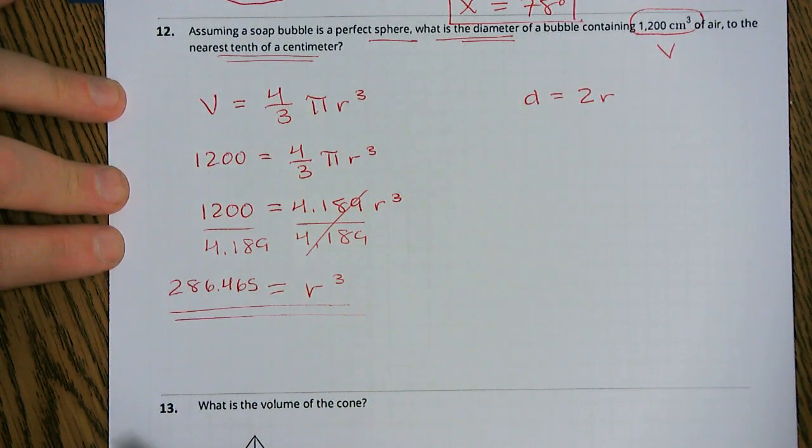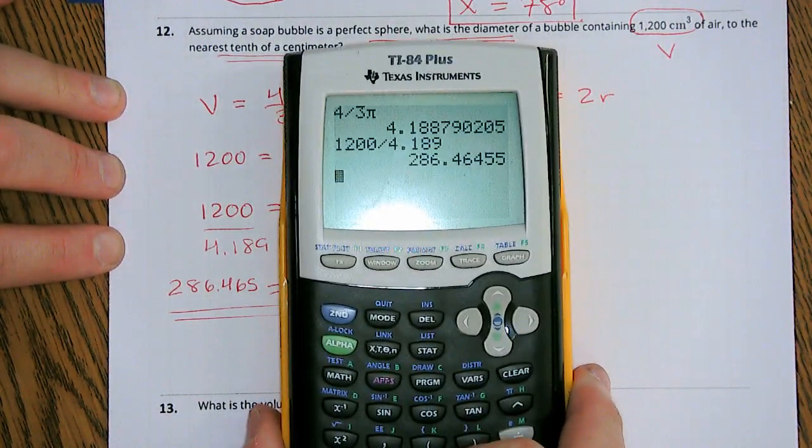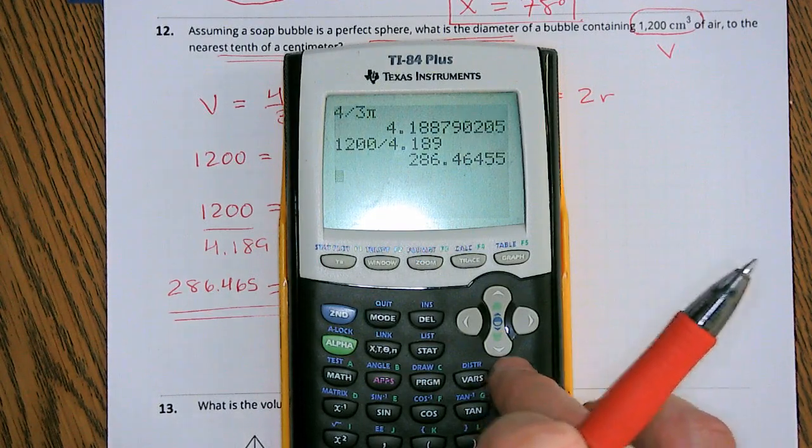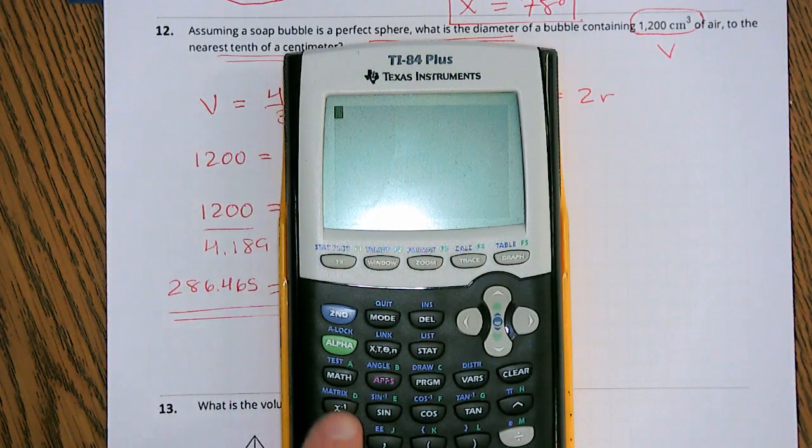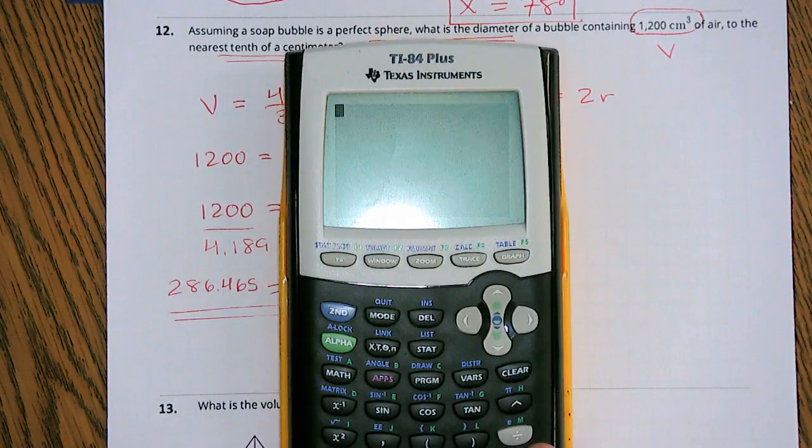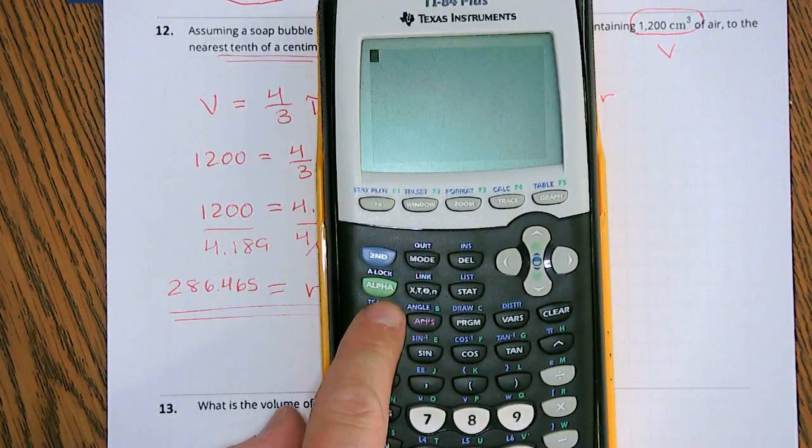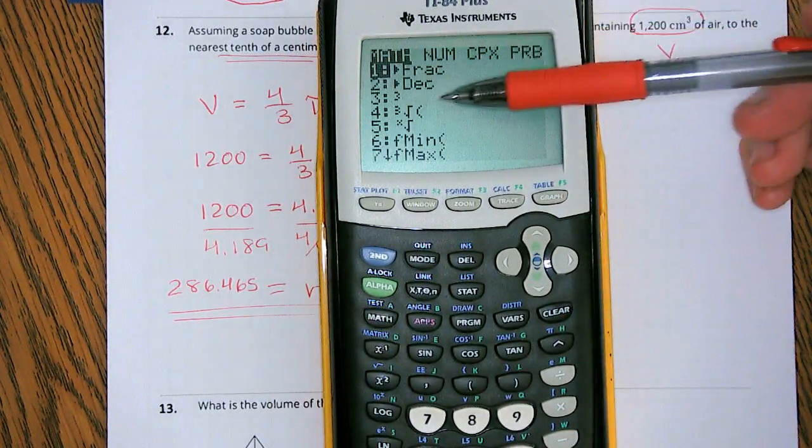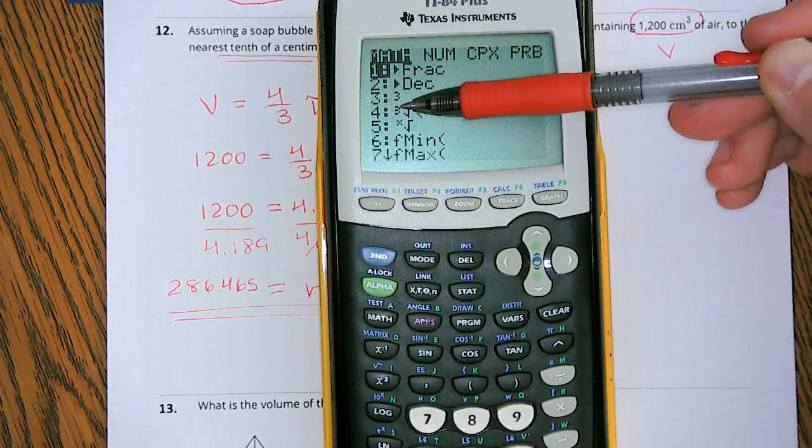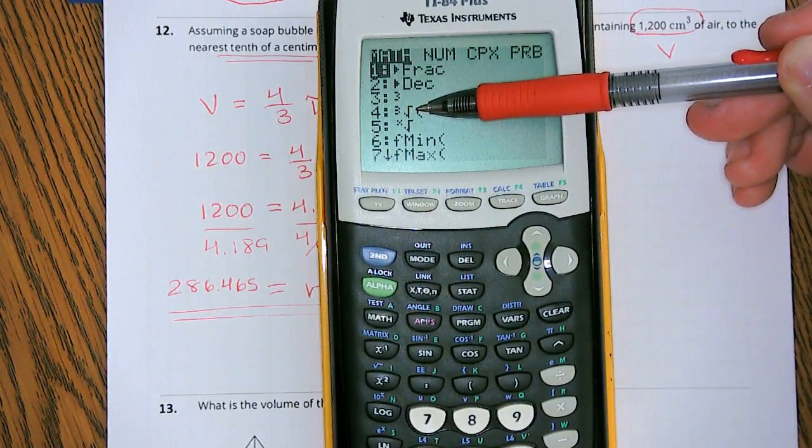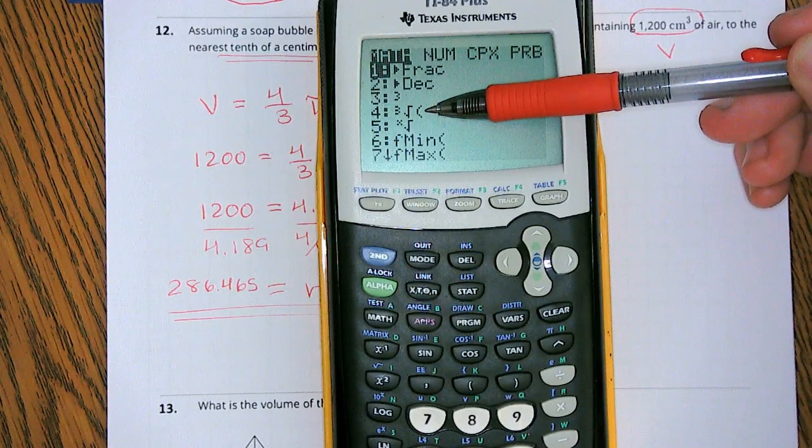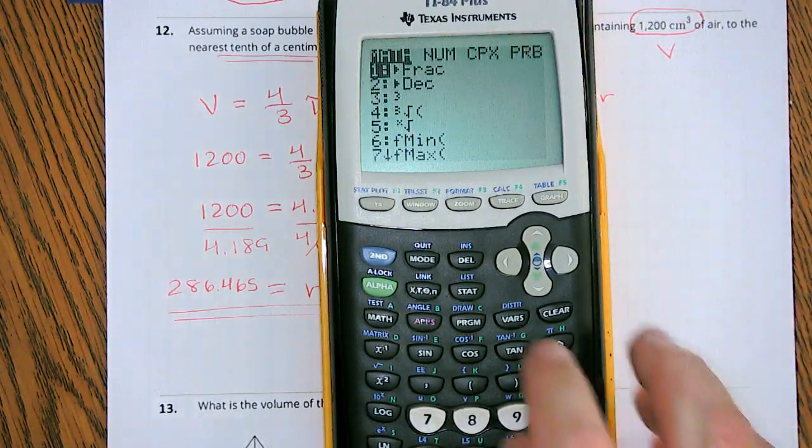We need the r because once we get r, we'll be able to substitute that in for our diameter. Now how do we take a cube root of something? Now this is something that we haven't worked on a lot here in class, but we're going to use this little math button right here. So if we hit this math button once, we can see that one of the functions down here, the fourth one, is the cube root of a number. This is what we're looking for. So we're going to arrow down, hit that enter button.